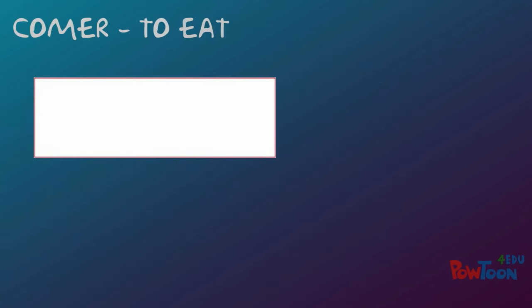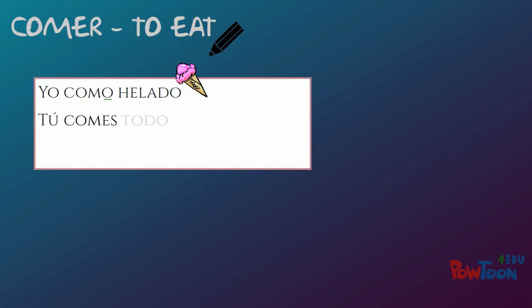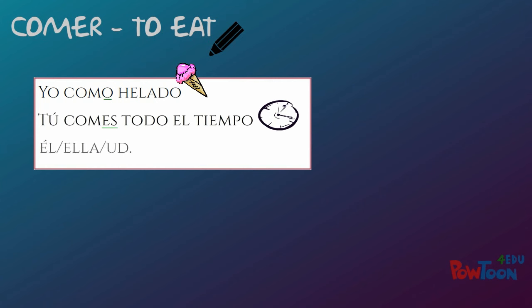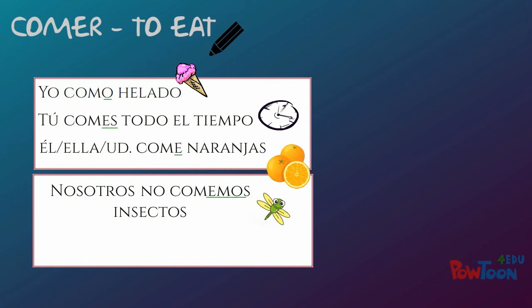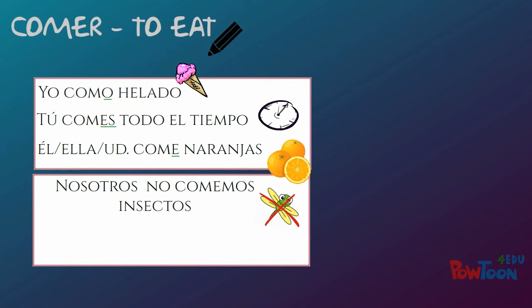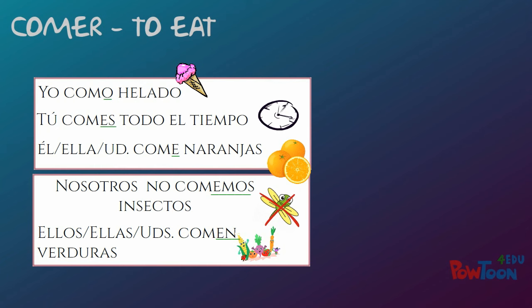Let's see this in action with the ER verb comer, to eat. Yo como helado — I eat ice cream. Tú comes todo el tiempo — you eat all the time. Él, ella, usted come naranjas — he, she, it, or you formal eat oranges. Nosotros no comemos los insectos — we don't eat bugs. Ellos, ellas, ustedes comen verduras — they eat, or you all eat vegetables.